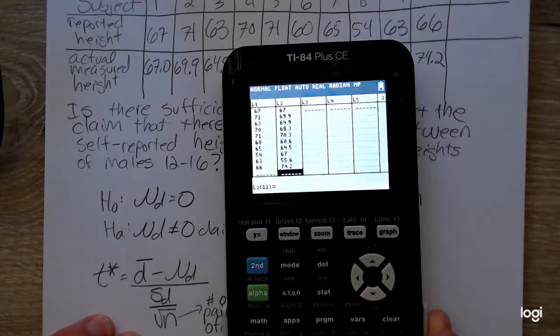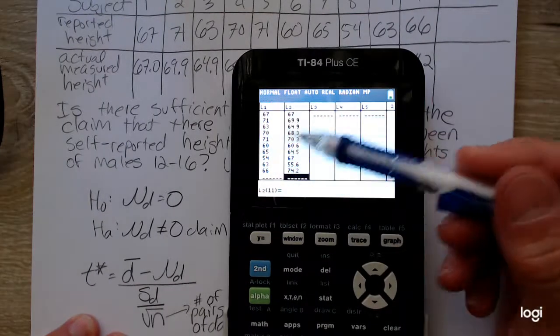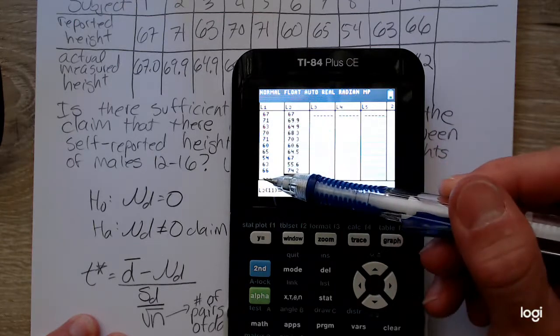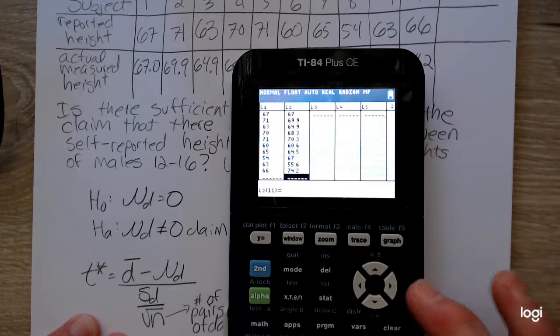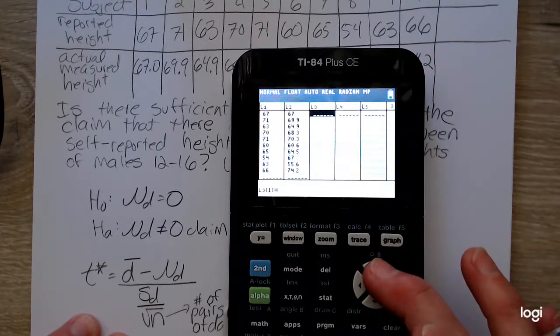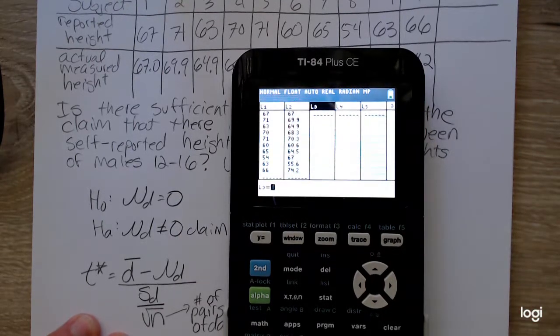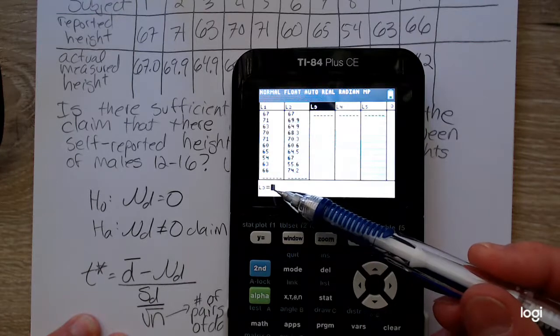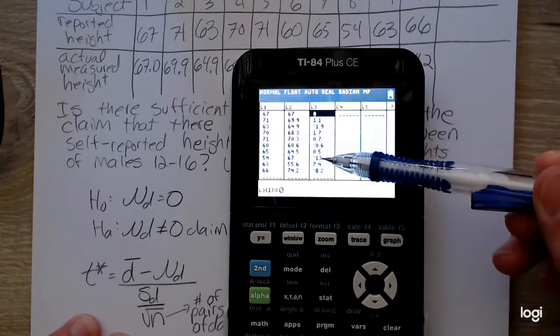I've already inputted the values in list one and list two. Here are all of the reported values and the measured values. I can arrow over to list three, up arrow so that it's highlighted, press enter. Then I tell the calculator I want to take list one and subtract list two. So I'll have my column of differences here.